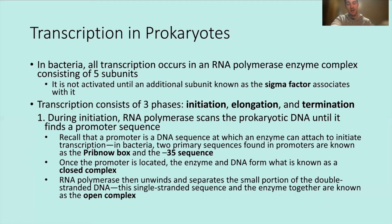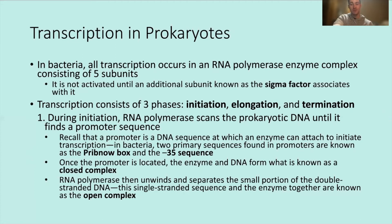During initiation, RNA polymerase scans the prokaryotic DNA until it finds a promoter sequence — a DNA sequence where the enzyme attaches to initiate transcription. In bacteria, two primary sequences are found in promoters: the Pribnow box and the -35 sequence. Once the promoter is located, the enzyme and DNA form a closed complex. RNA polymerase then unwinds a small portion of double-stranded DNA, and the resulting single-stranded sequence with the enzyme forms the open complex, transitioning toward elongation.